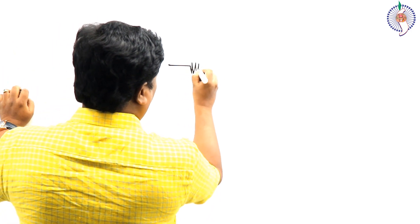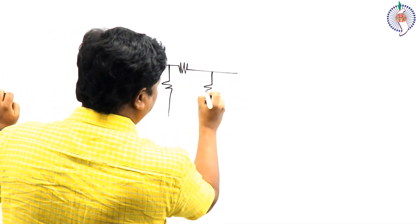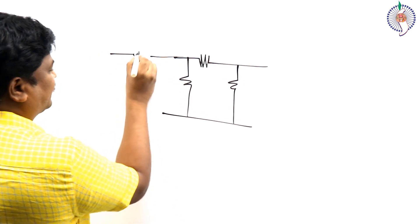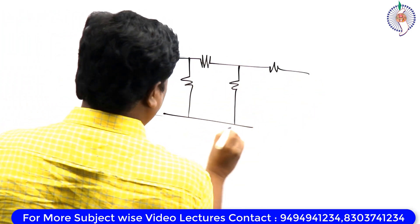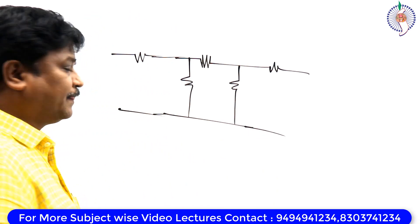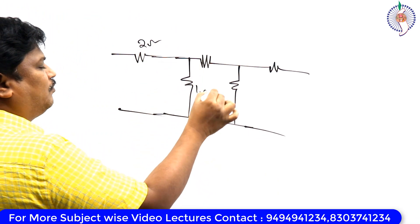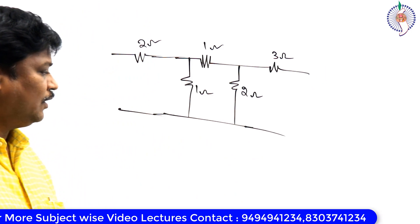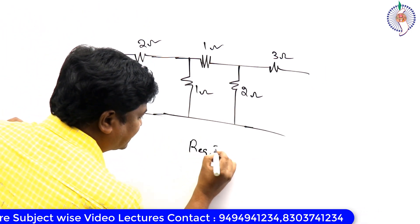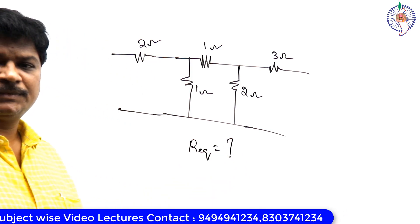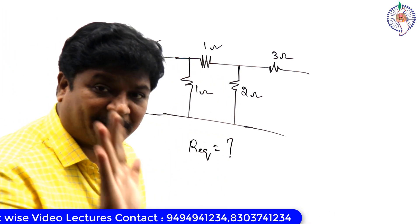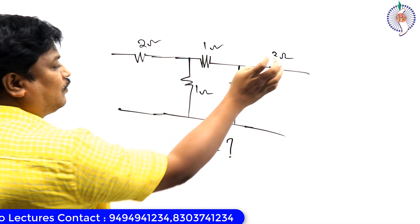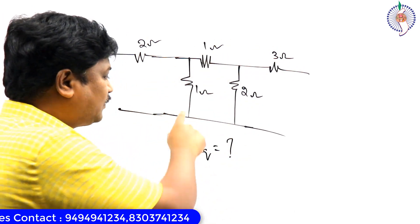Sir, this is the network. For example, this network has air resistance — something like this. Here we have two ohms, one ohm, one ohm, two ohms, three ohms — something like this. What is the equivalent resistance for this network? R equivalent for this network — first, hold the video, do this problem yourself. What is the R equivalent for this network having two ohms, one ohm, one ohm, two ohms, three ohms? You already know series and parallel combination. Try to do this problem.